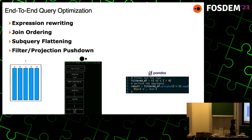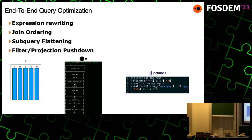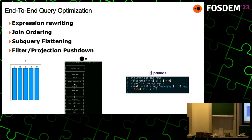DuckDB also has end-to-end query optimizations: expression rewriting, join ordering, subquery flattening, filtering, and projection pushdown — which is extremely important and brings a huge difference in query cost. For example, with a table of five columns A, B, C, D, E and a query selecting minimum of column A where A is greater than zero grouped by B, DuckDB's optimizer knows in the scanner that it only needs columns A and B and just doesn't read the others. In Pandas, you can apply the filter, group by, and aggregator, but at the time of filtering you're still pulling all the columns you're not going to use. You can manually make this optimization, but it's nice that the database system does it for you.